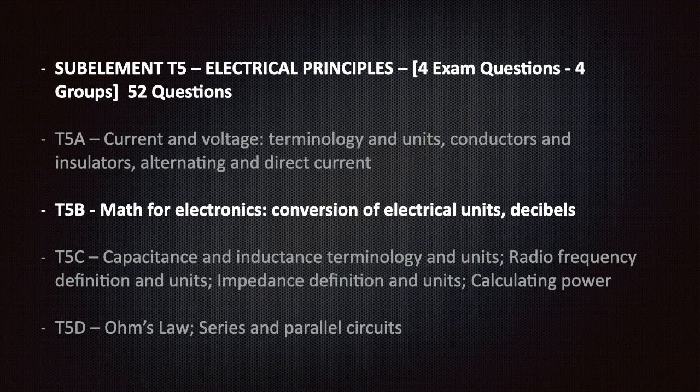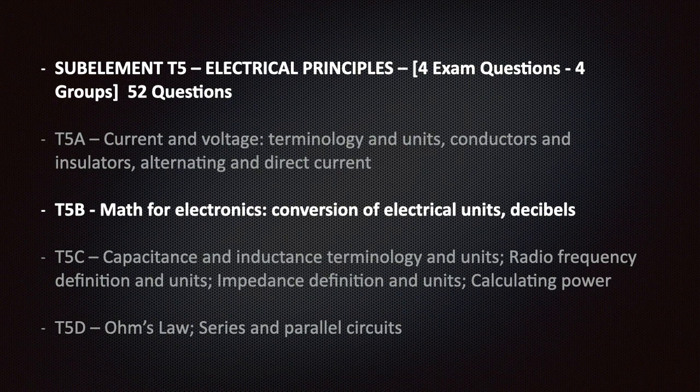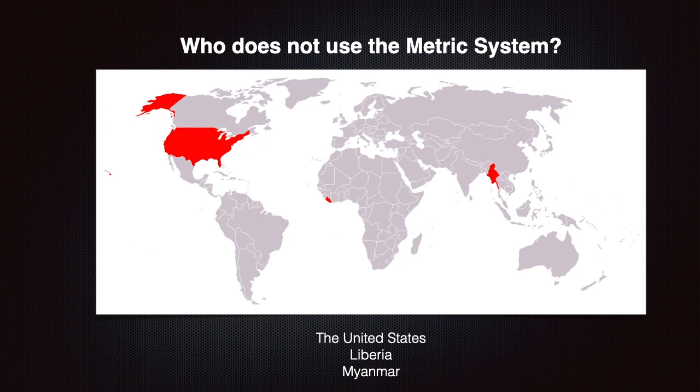The T5 section covers electrical principles. On your randomly generated test, you will be asked four questions from this sub-element. There are four groups in this section with 52 questions total. This lesson covers T5B: math for electronics, conversion of electrical units, and decibels.